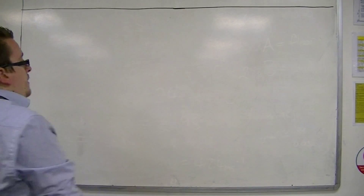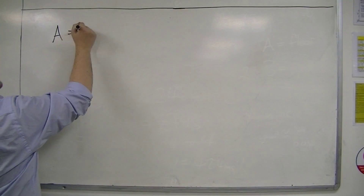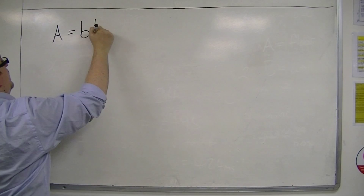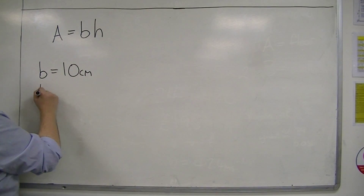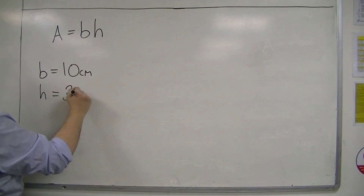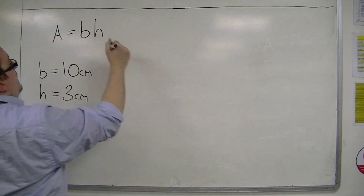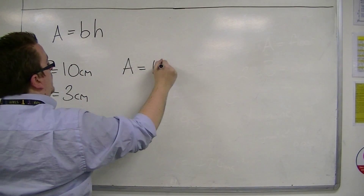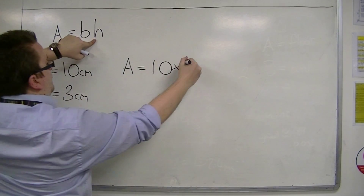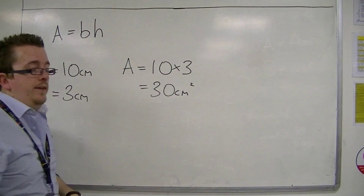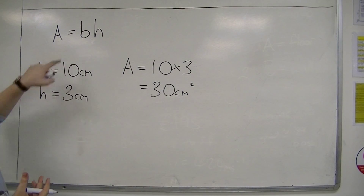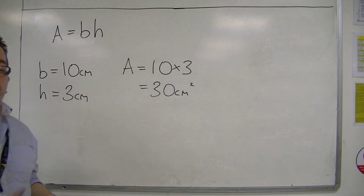For example, area equals base times height for a rectangle. So if you know that the base is 10 centimetres and the height is 3 centimetres, then the area is the base times the height — so 30 centimetres squared. The formula doesn't change; it's the values that I'm substituting in that change.